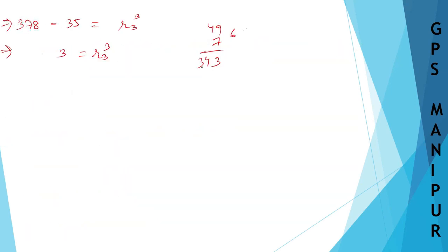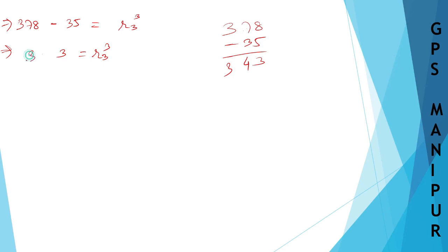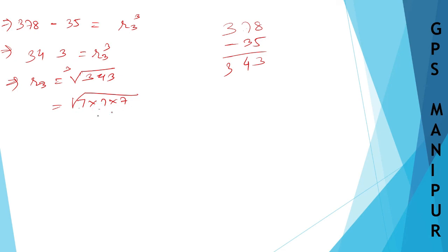So r3³ = 378 − 8 − 27 = 378 − 35 = 343. Therefore r3 = cube root of 343. Since 7 × 7 × 7 = 343, we get r3 = 7.